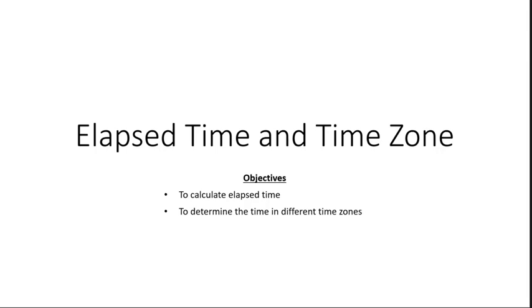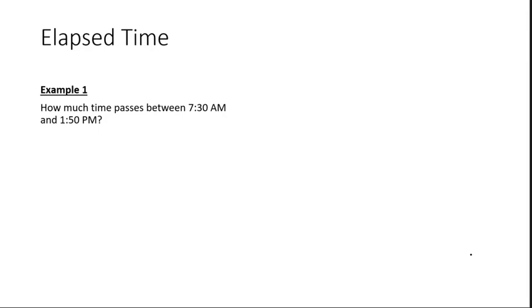Beginning with elapsed time — what does this mean? For example, let's say we were trying to figure out how much time passes between 7:30 a.m. and 1:50 p.m. The answer to that question is how much time has elapsed, or has gone by.